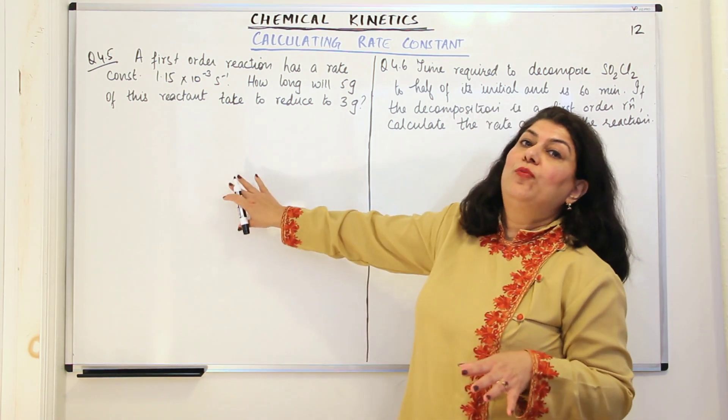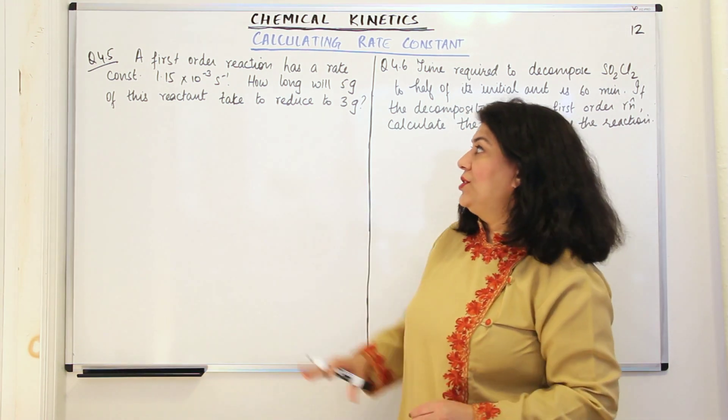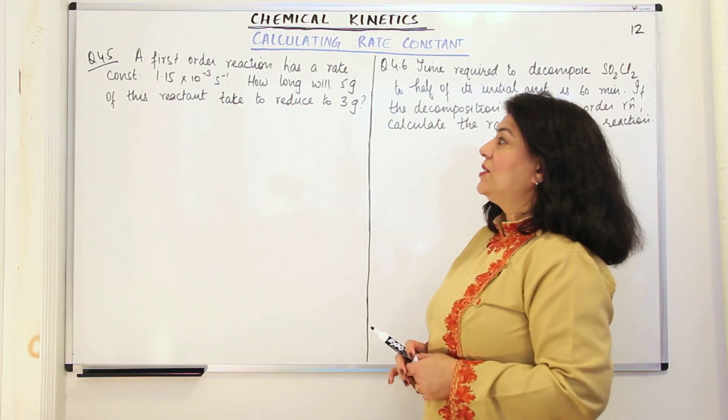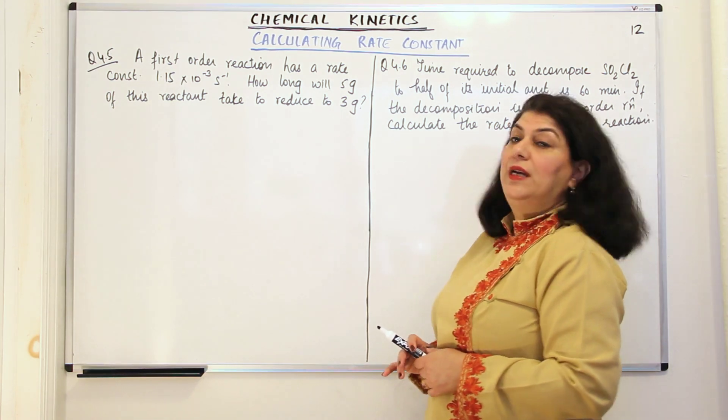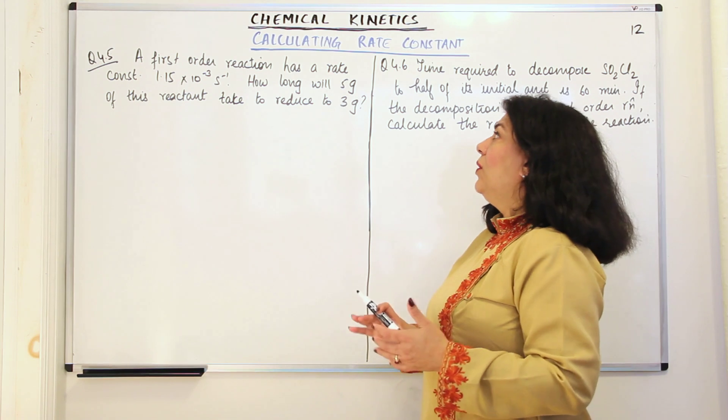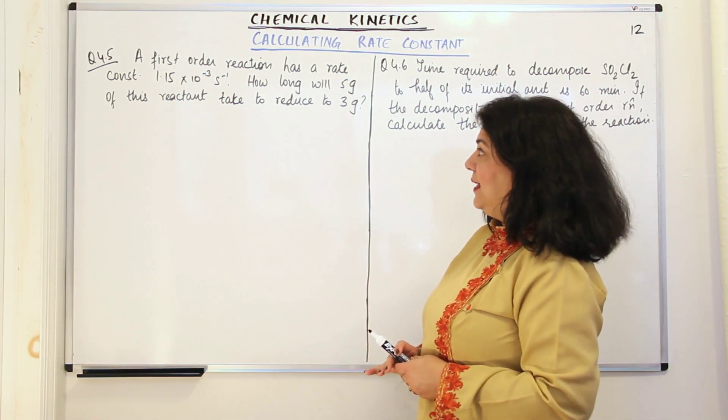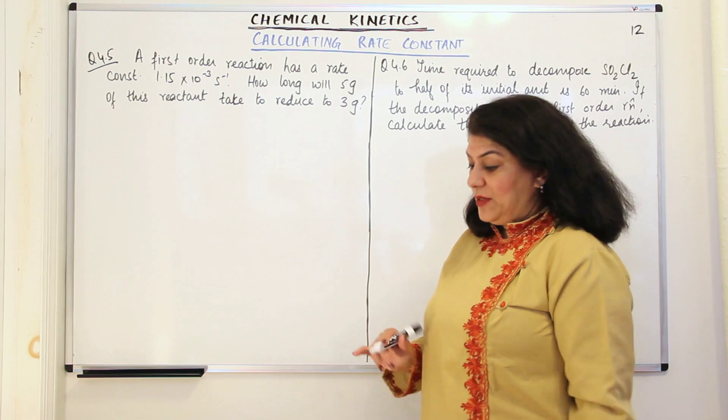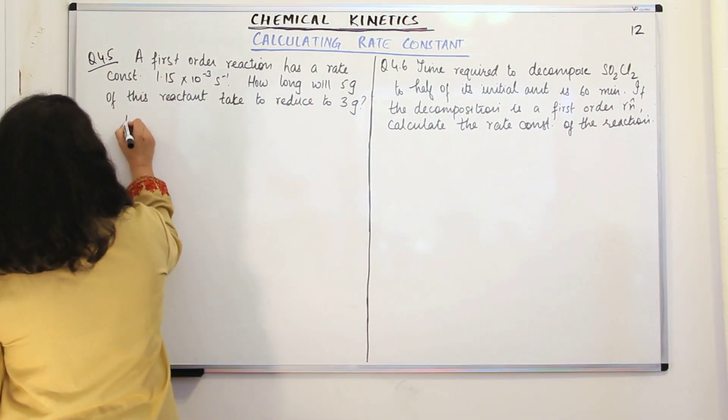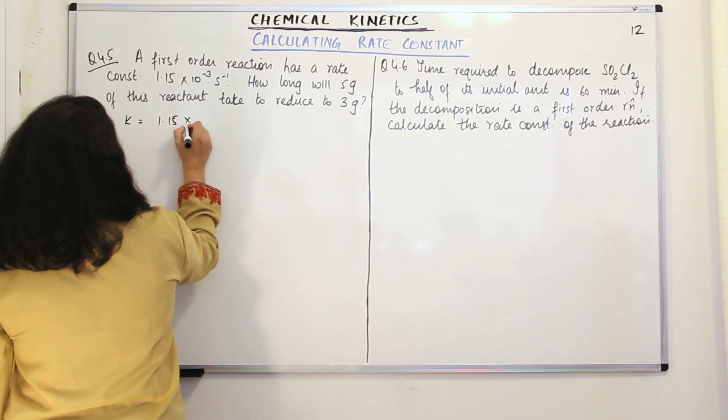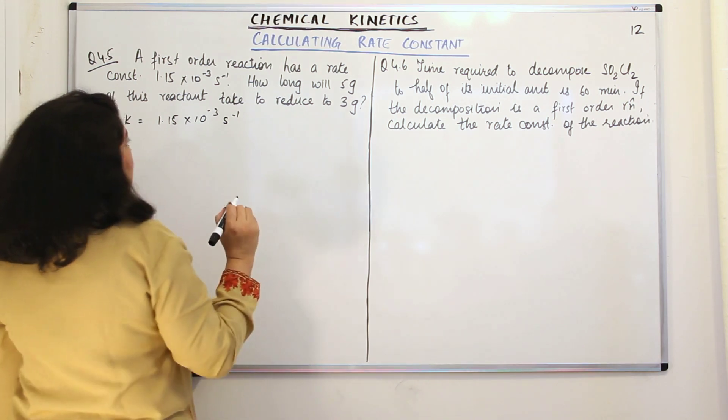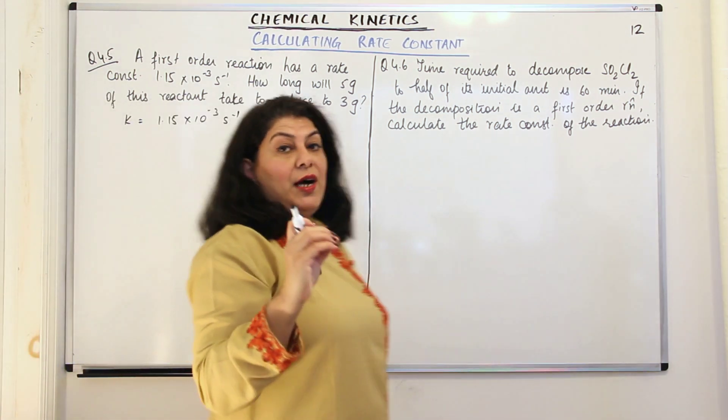This is question 4.5, your in-text question. Let me read the question. A first order reaction has a rate constant of 1.15 into 10 to the power minus 3 per second. How long will 5 grams of this reactant take to reduce to 3 grams? Rate constant K is given to us as 1.15 into 10 to the power minus 3 per second.